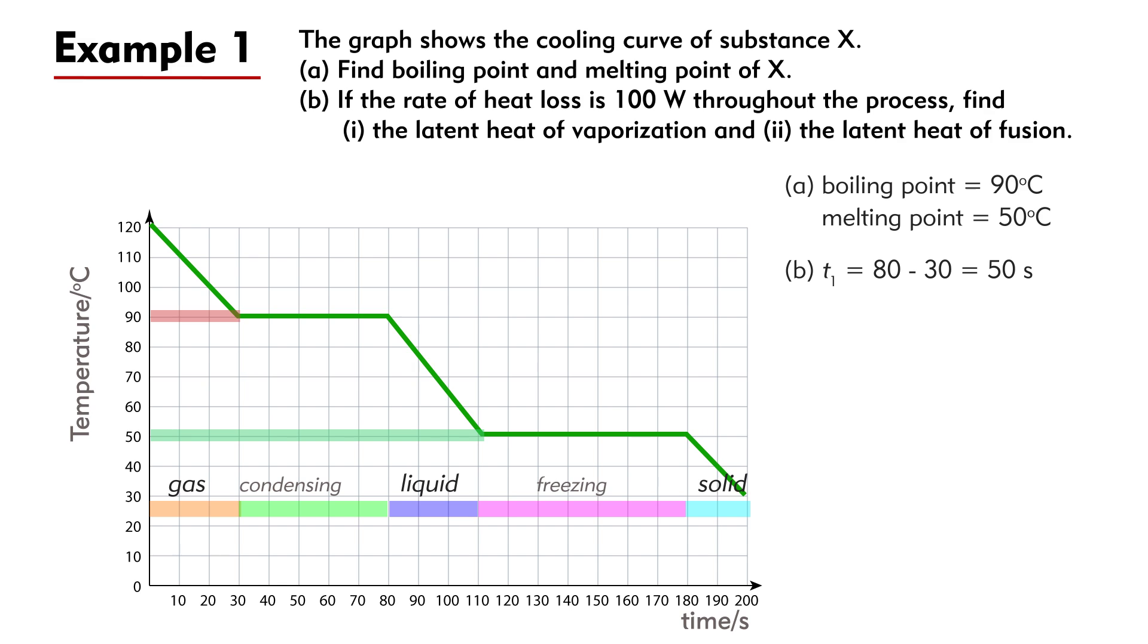The time for condensation is T1 = 80 - 30 = 50 seconds. By power = energy / time, P = Q / T. The latent heat of vaporization of X is Qv = P × T1 = 100 × 50 = 5000 Joules.